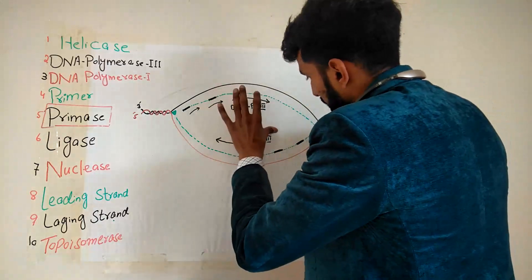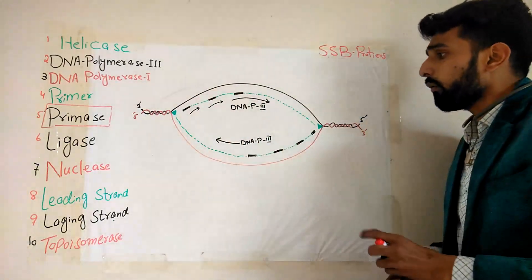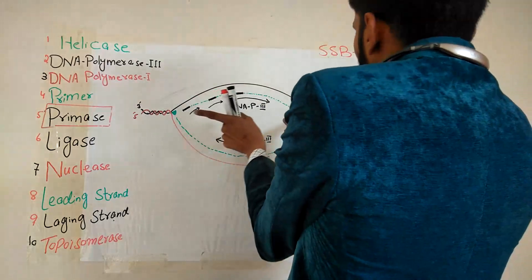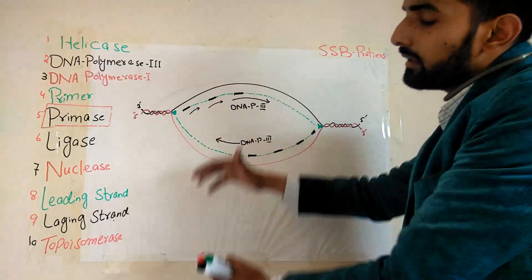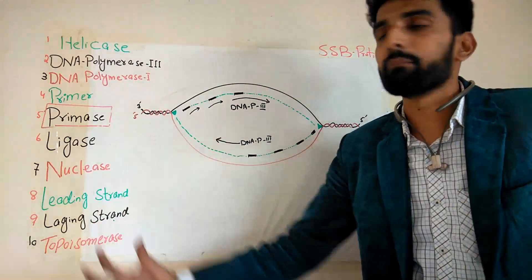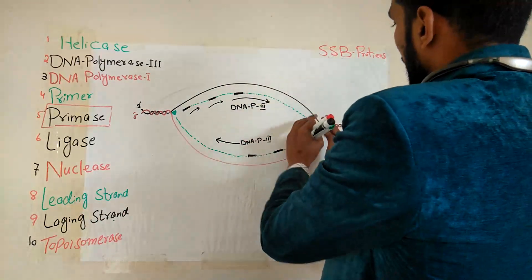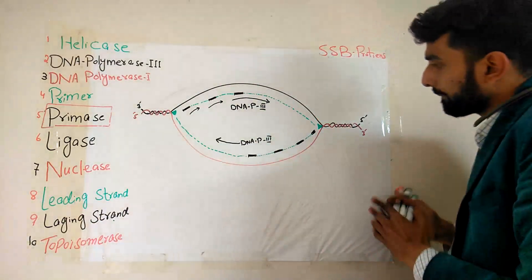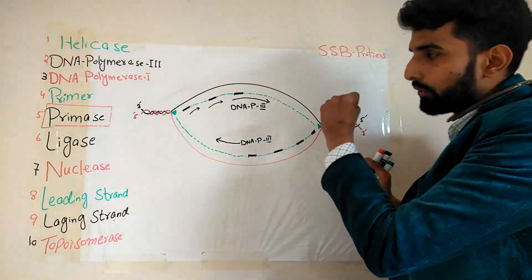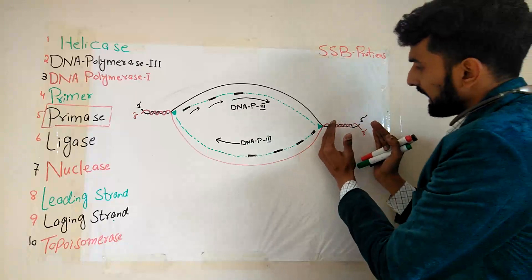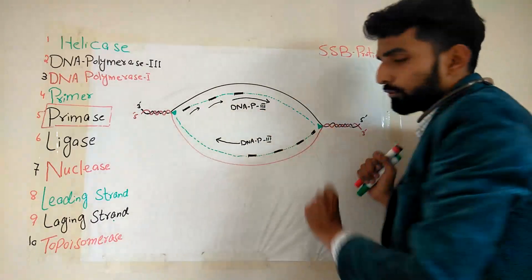This concept was explained in the previous lecture. Now, as the helicase enzyme keeps moving in both directions, the replication bubble gets bigger and bigger. There is a problem: as the replication bubble expands and the enzyme moves, at the terminals — both ends of the DNA strand — a super twist will be formed.